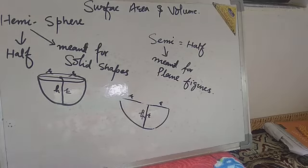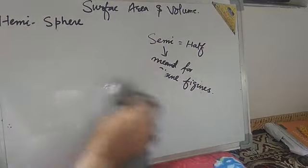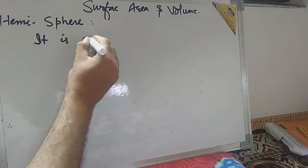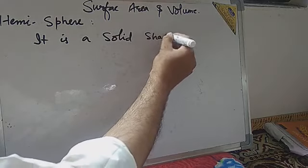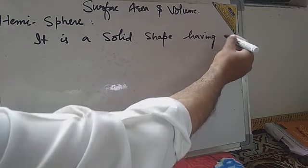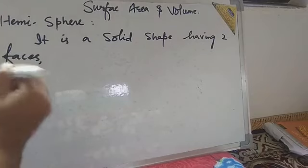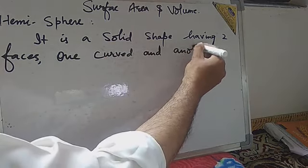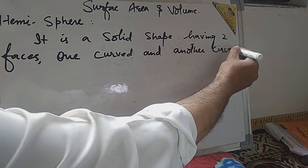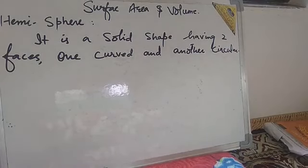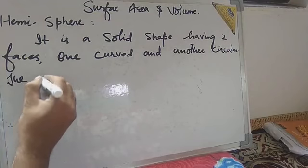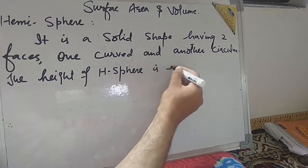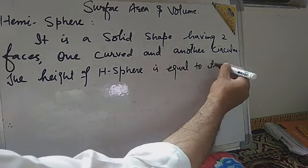Now you understand what I said — this is all about a hemisphere. Write down its definition: it is a solid shape having two faces — one curved and another circular. The height of the hemisphere is equal to its radius.